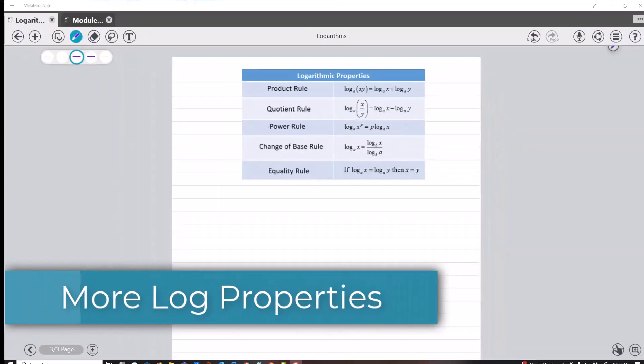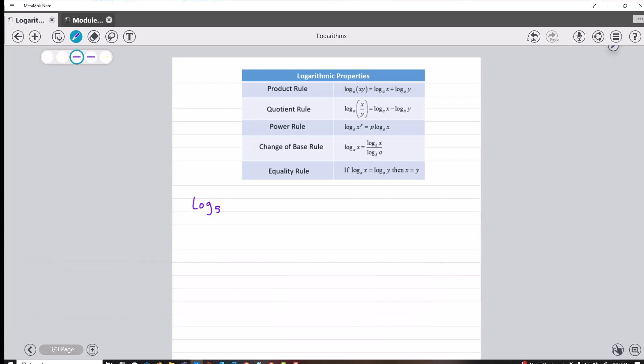I've been talking about these log properties. If I have log base 5 of x squared plus 7x plus 12 over x squared plus 4x, we notice that this is a quotient. So log base 5 of x squared plus 7x plus 12 minus log base 5 of x squared plus 4x. And you might think you can do some more with this, but these are not products or quotients, so that's it. That's all you can do with this one.